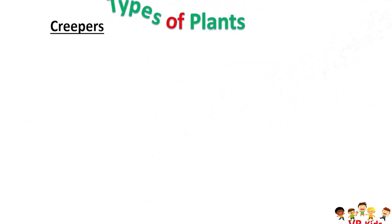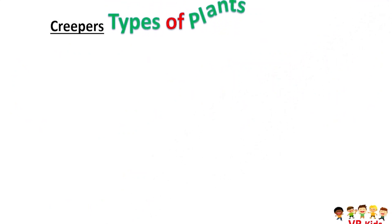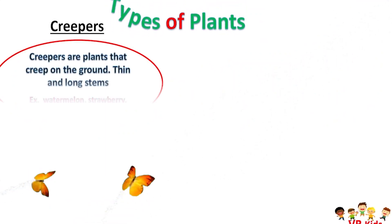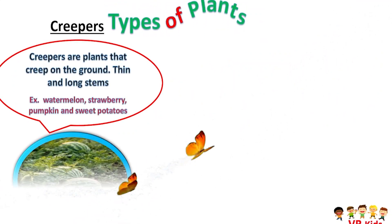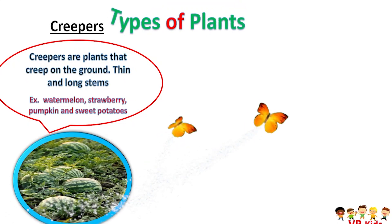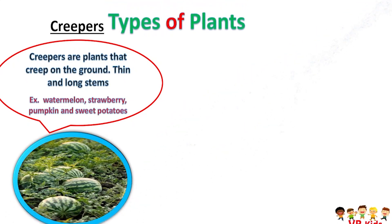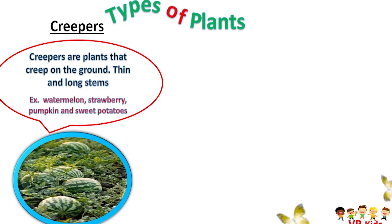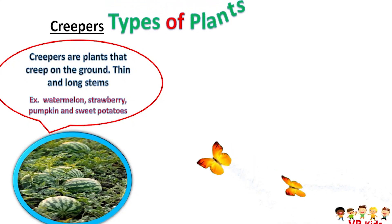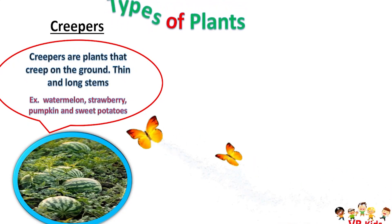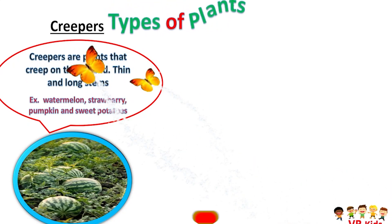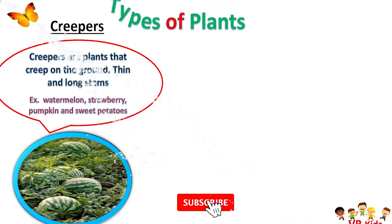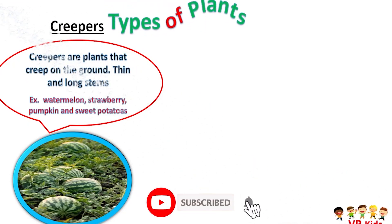Creepers are plants that creep along the ground. They have thin and long stems. Examples: watermelon, strawberry, pumpkin and sweet potatoes.